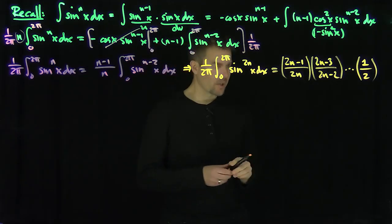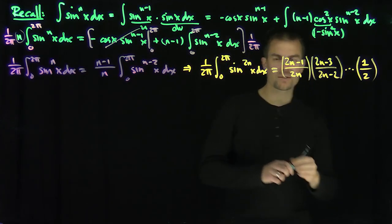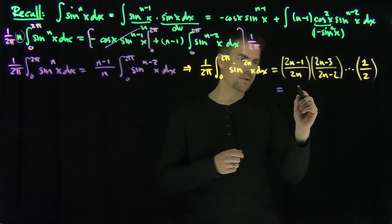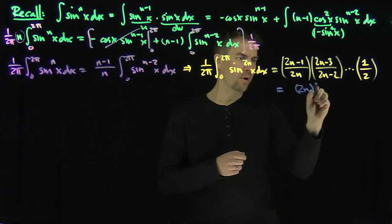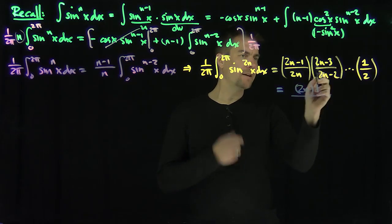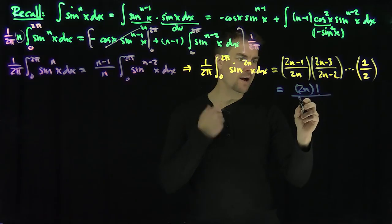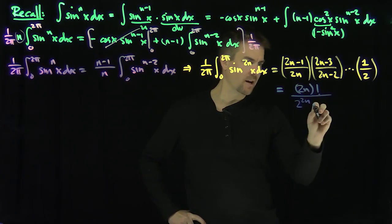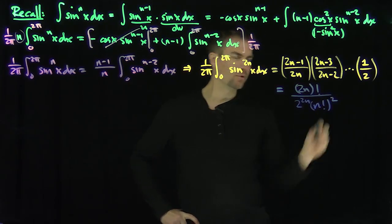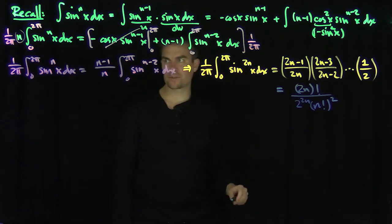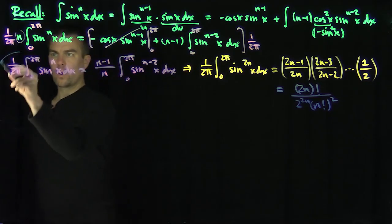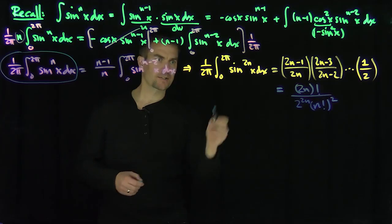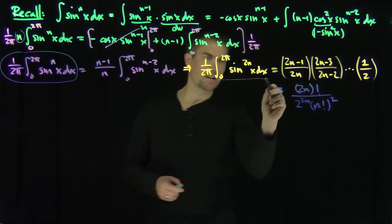Now I can do a little algebraic manipulation. This equals (2n)! up top — that gives me all the odd factors. I've added in an extra factor of 2ⁿ n! twice, so this becomes (2n)! over (2²ⁿ (n!)²). So I've found a formula for (1/2π) times the integral from 0 to 2π of sinⁿ(x) dx in the case when n is even.